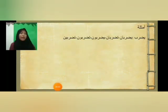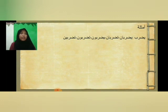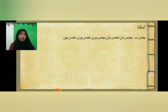Untuk contohnya, dari kata Yadribu: bentuk dari aliful isnin yaitu Yadribani dan Tadribani; bentuk dari wawul jama'ah yaitu Yadribuna dan Tadribuna; dan bentuk dari ya'ul mukhotbah yaitu Tadribina.